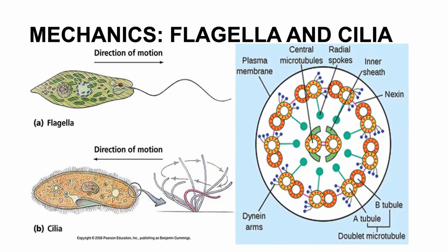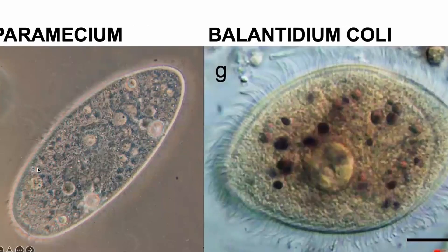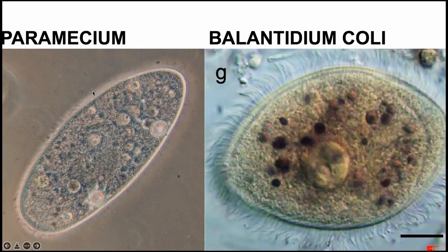This is a histology image of ciliated epithelium — you see the cilia projecting outwards, basement membrane below, and connective tissue further down. This is a high-resolution electron micrograph of ciliated epithelium. In terms of mechanics, these projections — cilia, flagellum — move based on their protein structure. It is microtubules that help them move. There is a central microtubule that facilitates movement, and different motor proteins assist the movement.